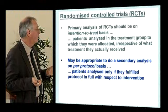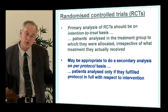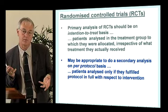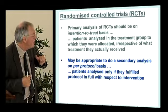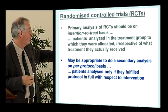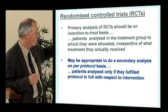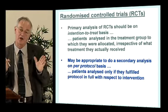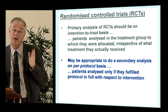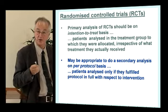Randomized controlled trials should be analyzed on an intention-to-treat basis — patients are analyzed in the group they were allocated to, irrespective of what happened during the study. In certain circumstances it may also be appropriate to do a per-protocol analysis, where you only analyze patients who actually fulfilled their treatment obligations.